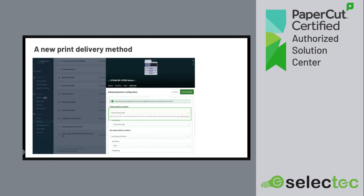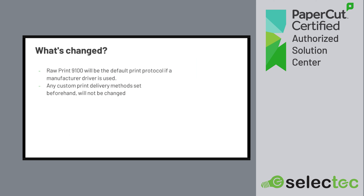If unable to use 9100, it will automatically drop down through the various stages. If it's unable to use 9100, it will look for a print queue or driver — if available, it will use that. If there are no print queues available, it will use the third method, which is IPP. Raw 9100 will be the default printing protocol. If manufacturer drivers are used, any custom print delivery methods set beforehand will not be changed — no changes will be made when this is pushed.